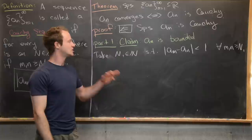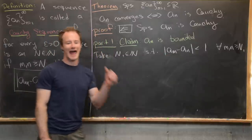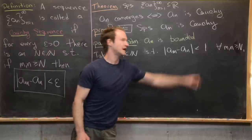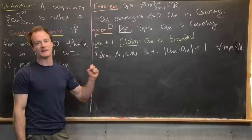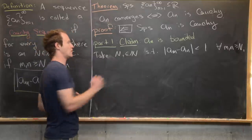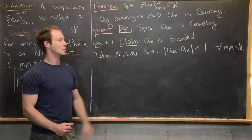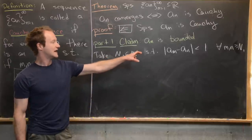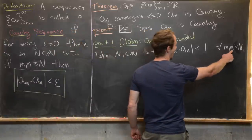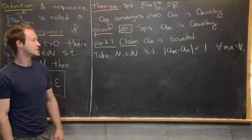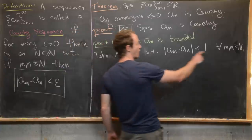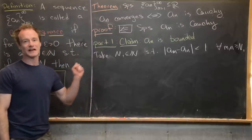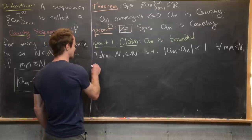Since we assumed a_n is Cauchy, we can make terms as close as we want — here within one of each other. So N₁ is the special natural number after which every term is within 1 of all other terms. This holds for all m and n ≥ N₁, and in particular for m = N₁ and all n ≥ N₁. So we fix m = N₁.